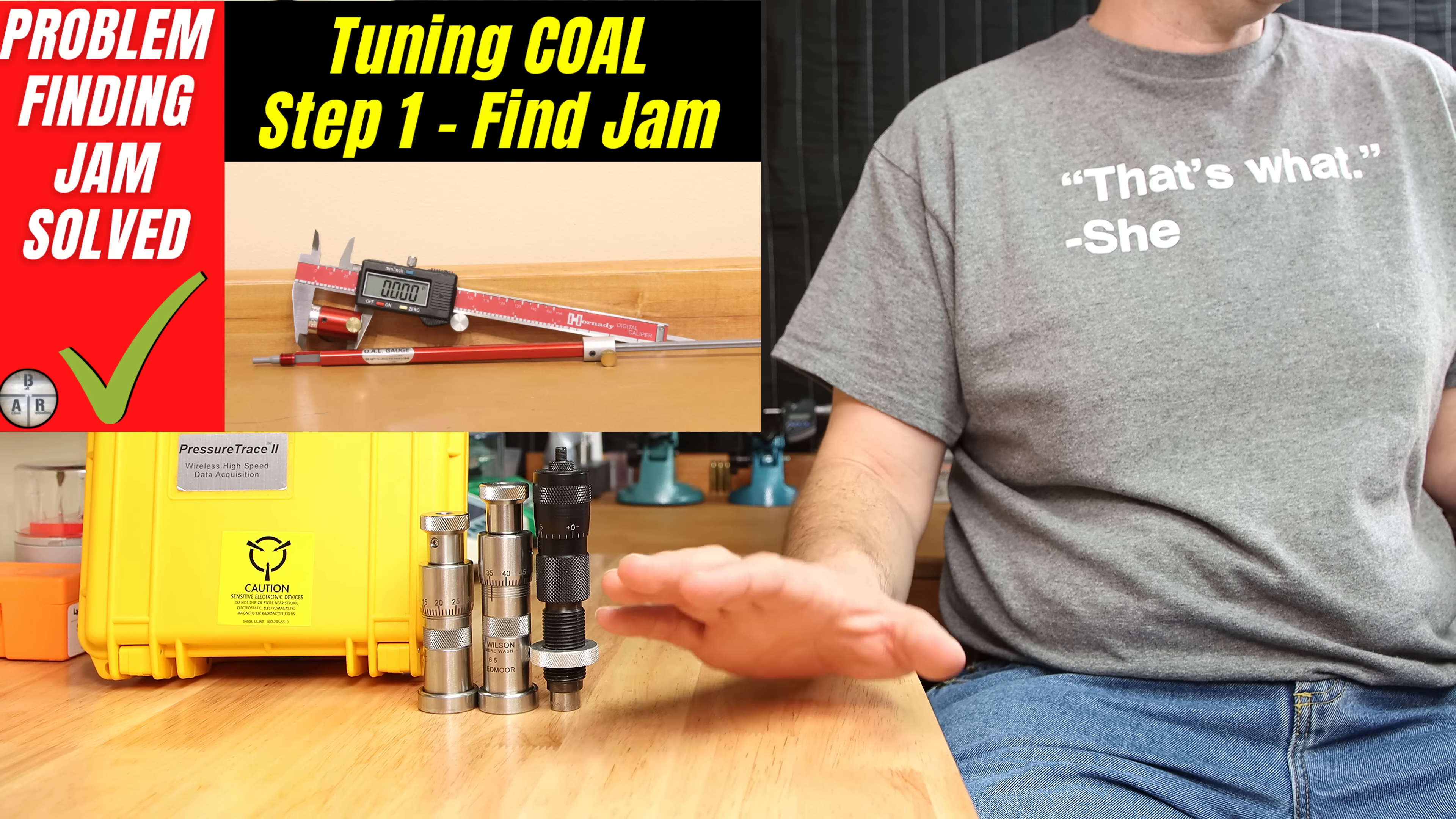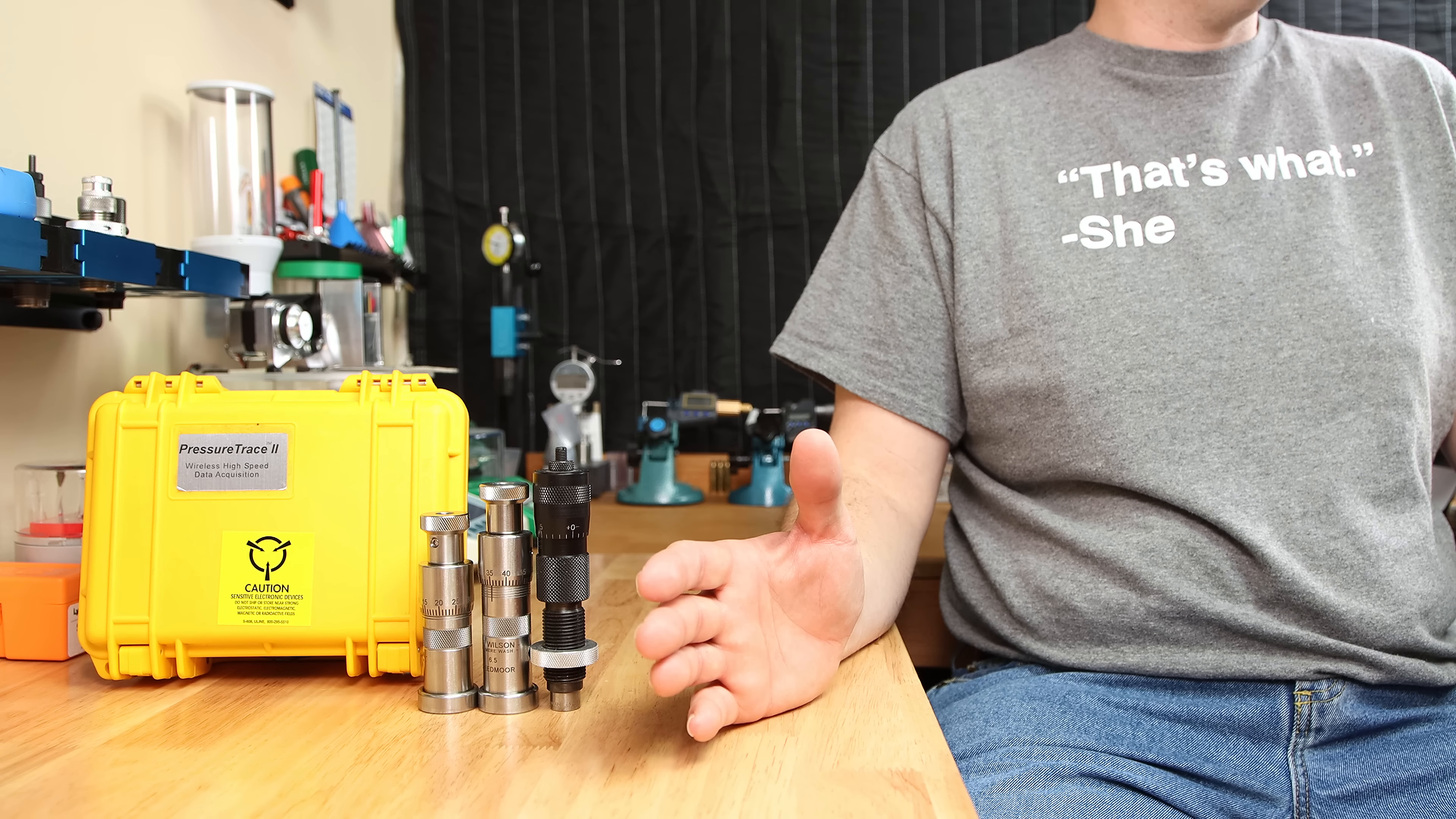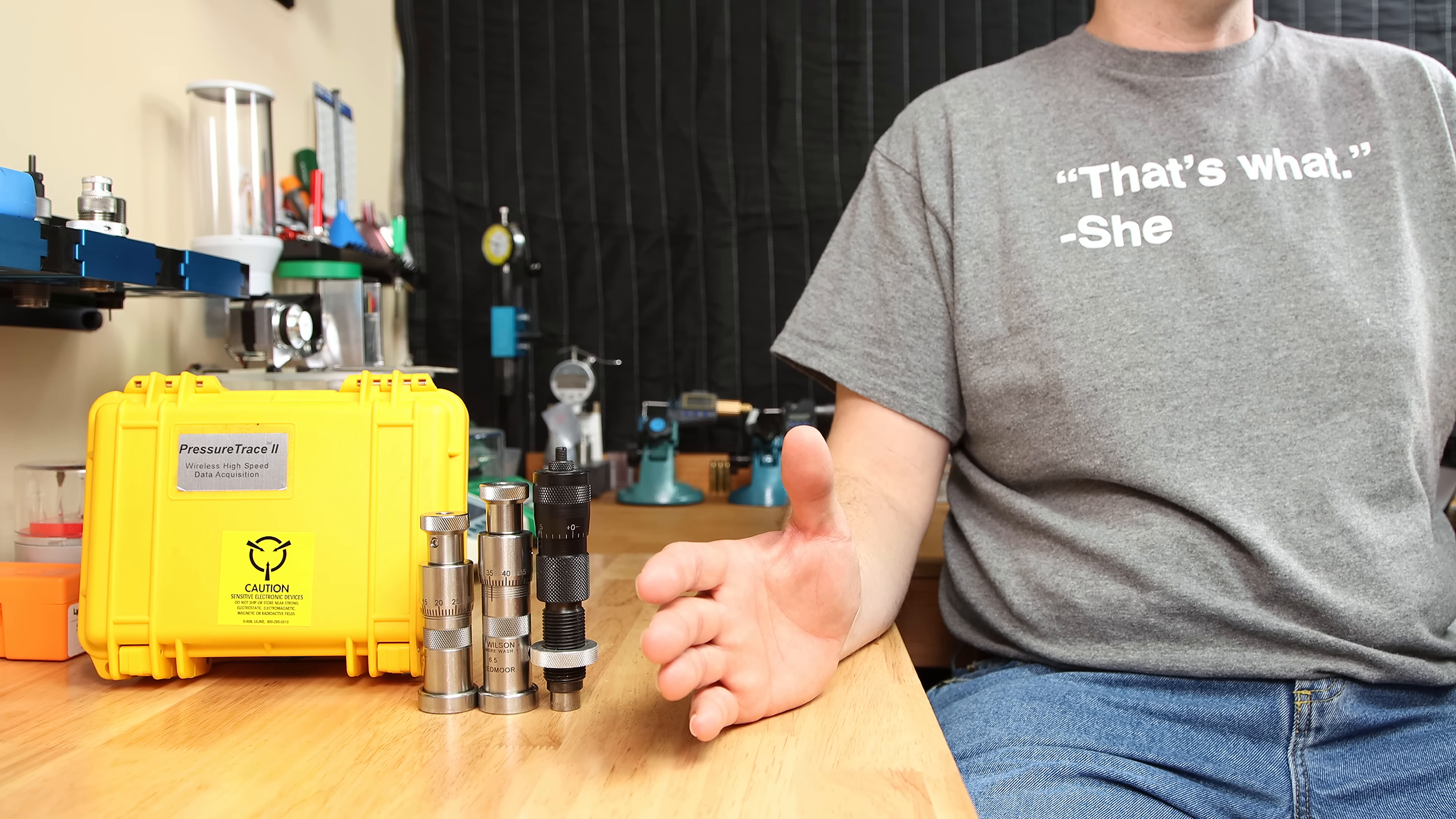We're going to be looking at some data in 6.5 Creedmoor, as well as 223 Remington. For this test, I backed down my charge weights just a little bit to make sure we didn't run into anything that would spike our pressures too high, which if you're running a hot load you may need to do as you move the projectile closer into the lands.